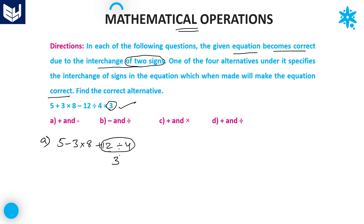First priority is always given to division: 12 ÷ 4 = 3. Next priority is multiplication: 3 × 8 = 24. So we get 5 - 24 + 3, which is not equal to 3. Therefore option A is eliminated.